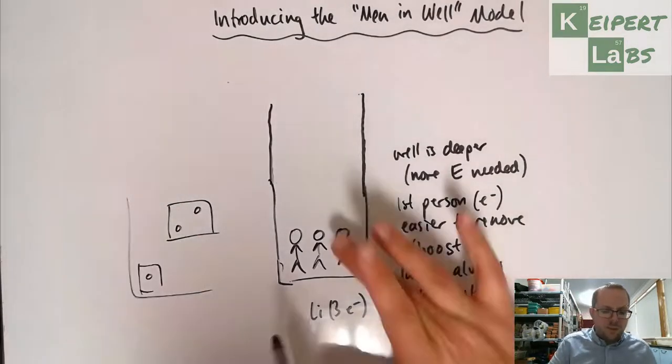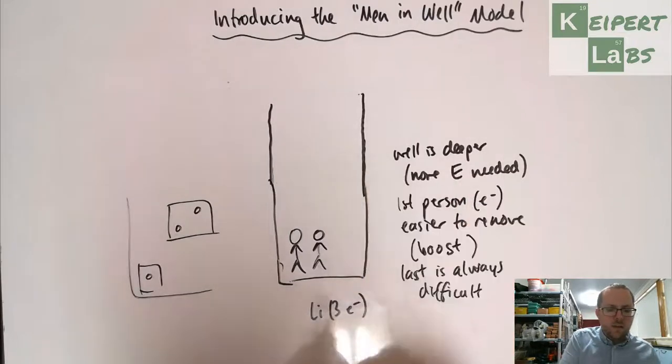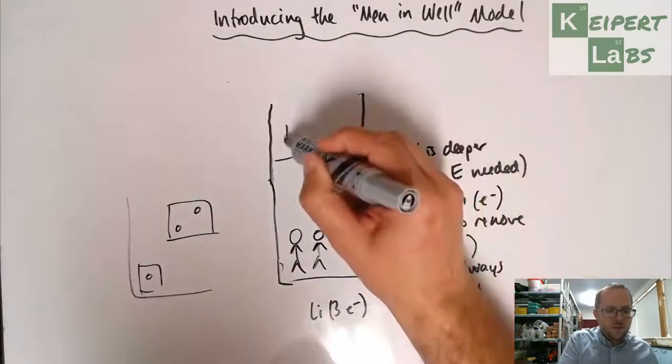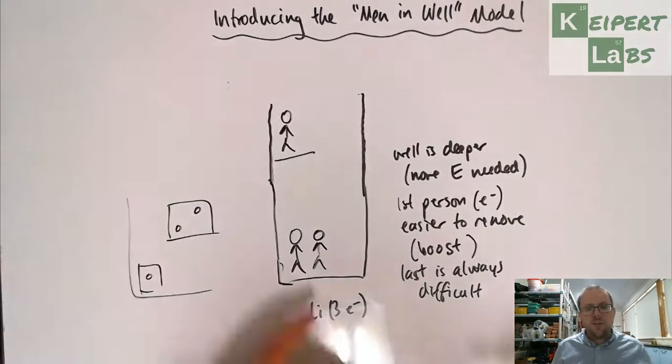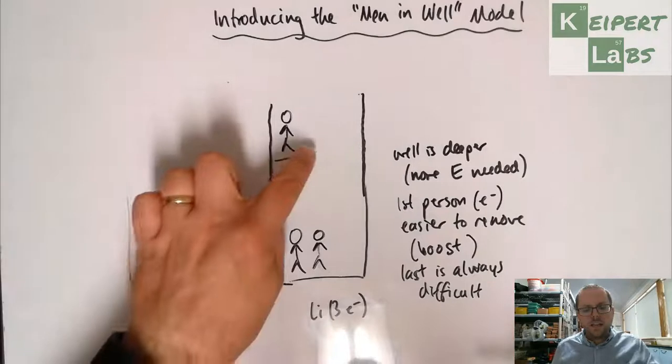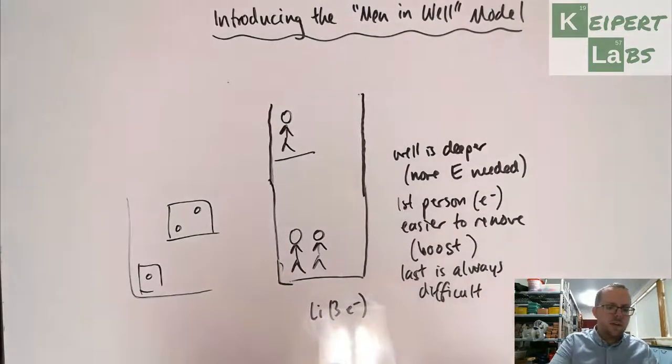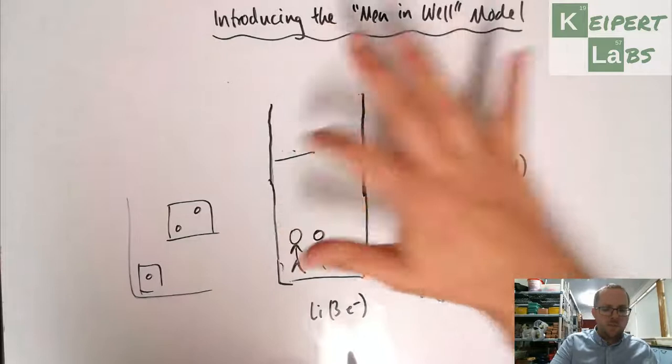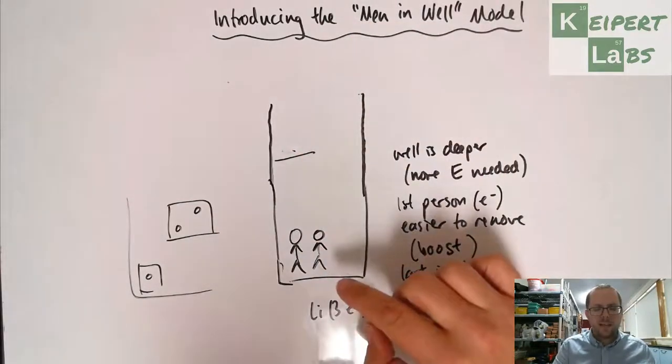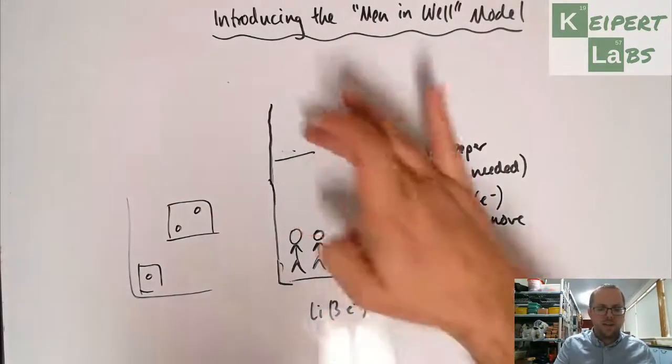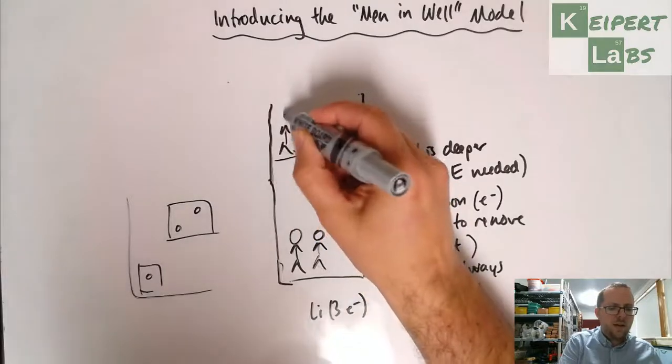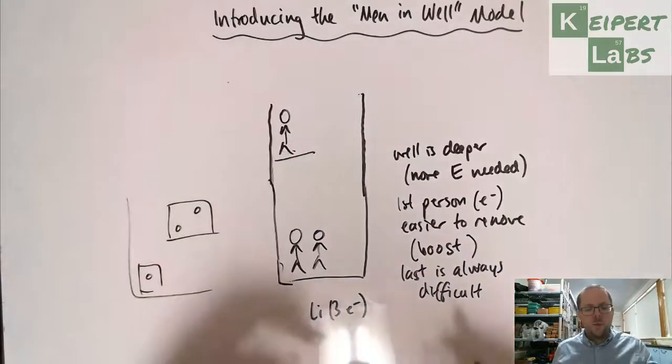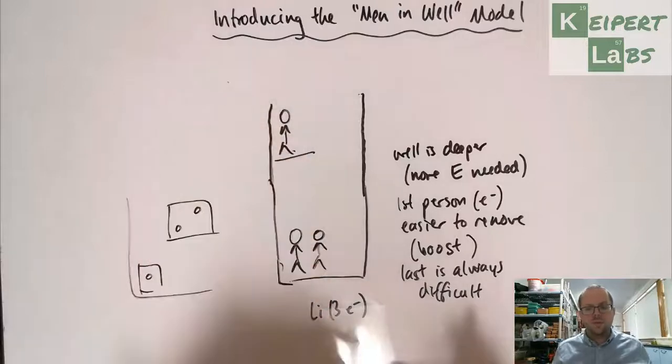So what we could do to represent that is let's imagine that our well has a ledge. Our first man is stuck on the ledge rather than right at the bottom, so he's easier to get out than the guys who are stuck down the bottom. So he gets out but then we have to get the guys out from the bottom and we're back to the same situation that one can boost the other to get out and then the last one is stuck and it's hardest to get out. But the presence of this ledge in our analogy helps to make sense of why we seem to remove electrons in two stages.